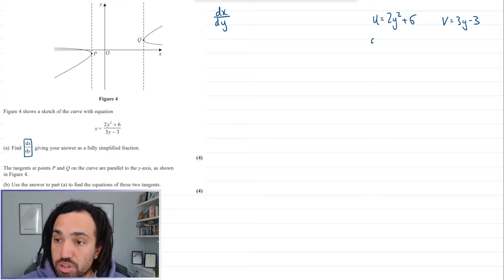So what I'm going to want to do is differentiate both. So this is going to give me 4y and when I differentiate this one this is going to give me 3.